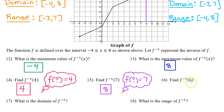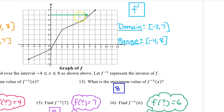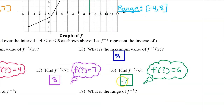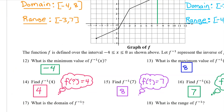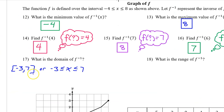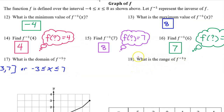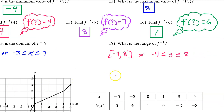Number 16: find f inverse at 6. Ask yourself, f at what is equal to 6? We can see that f at 7 is equal to 6. So that's the answer to number 16. Number 17: what is the domain of f inverse? We found that at the beginning — the domain of f inverse is the closed interval from negative 3 to 7. You can write your domain using interval notation or as an inequality. Number 18: the range of f inverse is the closed interval from negative 4 to 8. You can write this range using interval notation or using an inequality.